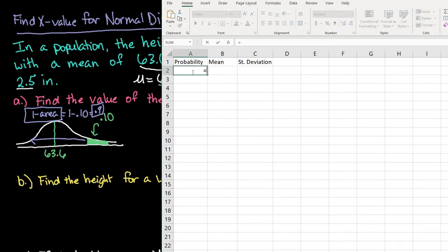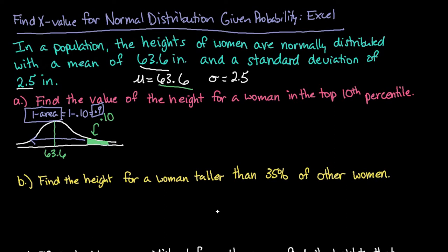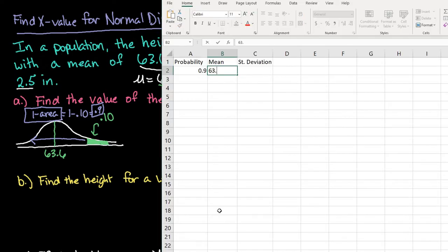I could have typed in equals 1 minus the area the 0.10 and of course it changes it to 0.9 anyway. The mean is going to be our 63.6 and our standard deviation is 2.5. The reason I'm putting it up here is because in my formula I'm going to use these cells. That way I can just change this instead of having to change the formula.